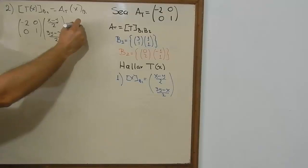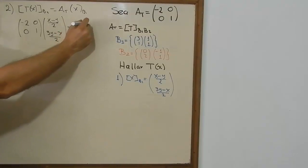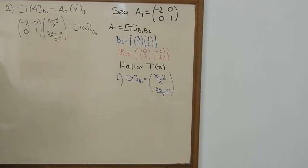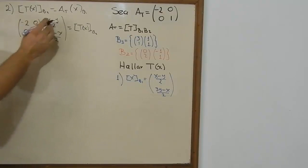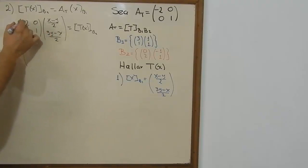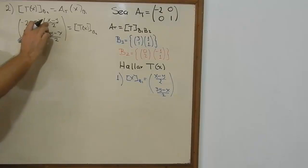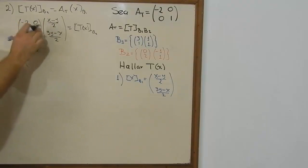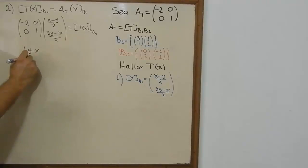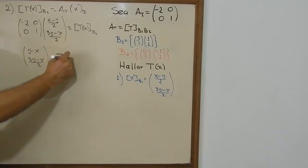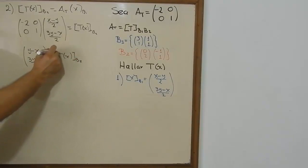We do the math: −2 times (x − y)/2 — the 2's cancel and the sign changes — giving y − x. Then 0 times (3y − x)/2 equals 0. For the second row: 0 plus (3y − x)/2. So the transformation on base 2 is the vector [y − x; (3y − x)/2].